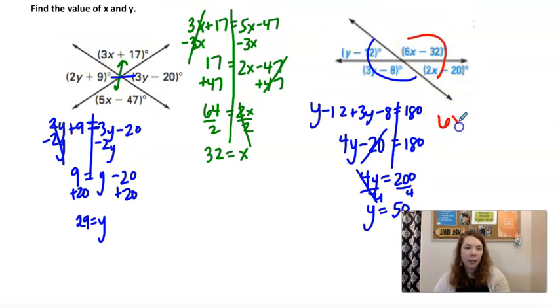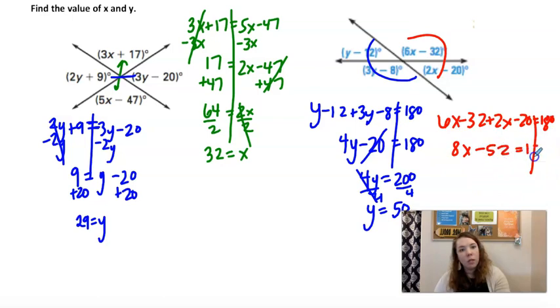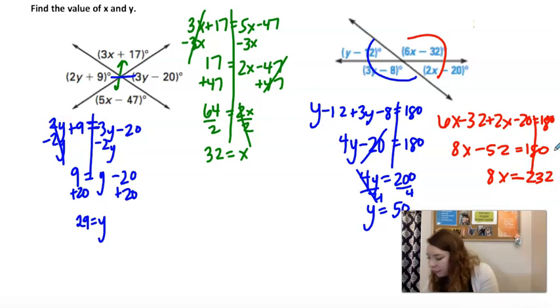And then x would be the same. They're supplementary. All right. So 8x minus 52 equals 180. Add 52. And divide by 8. Is 29.